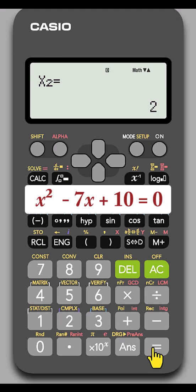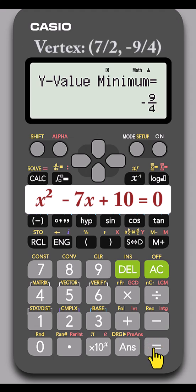On some versions of the calculator, pressing equal again will show the x-coordinate of the vertex. And pressing it one more time shows the minimum or maximum value of y.